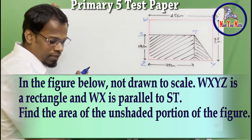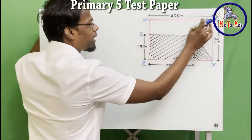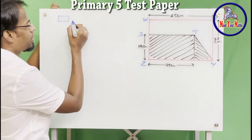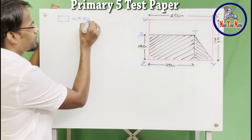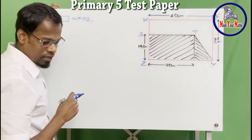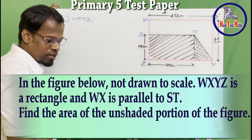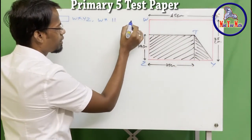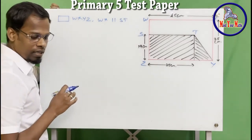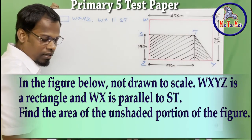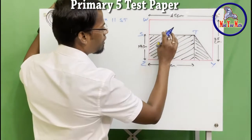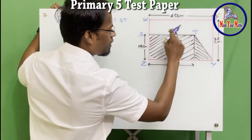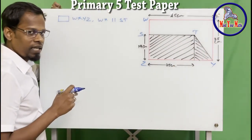WXYZ is a rectangle — that's what is given. And it is also given that WX is parallel to ST, which means WX parallel to ST. So that's what is given, and we need to find the area of the unshaded portion of the figure. So this is all shaded, and this is the unshaded portion.